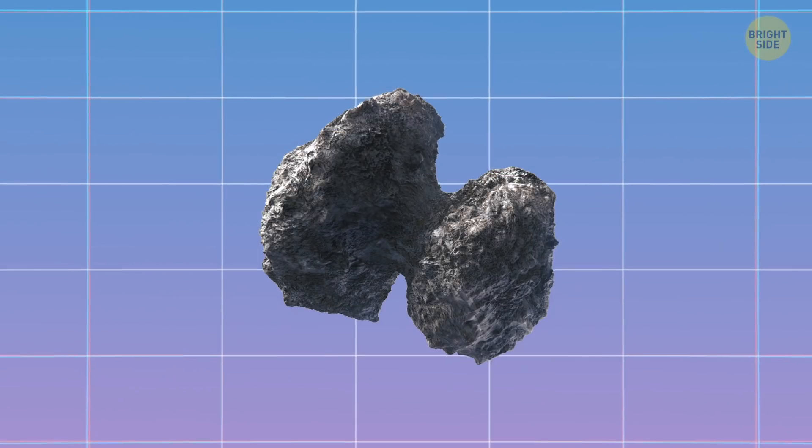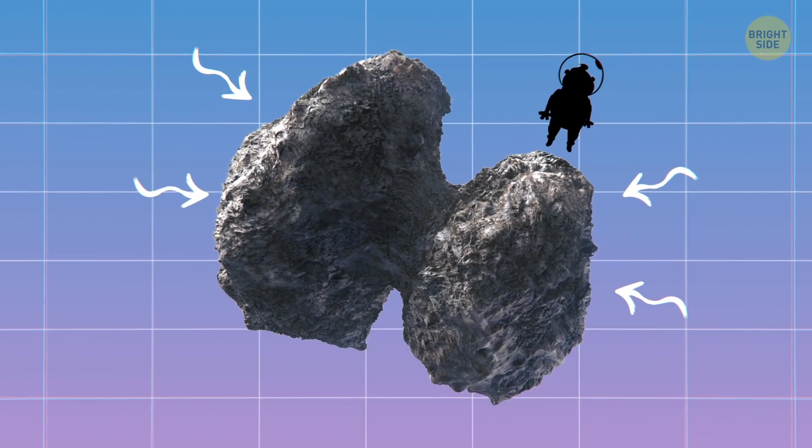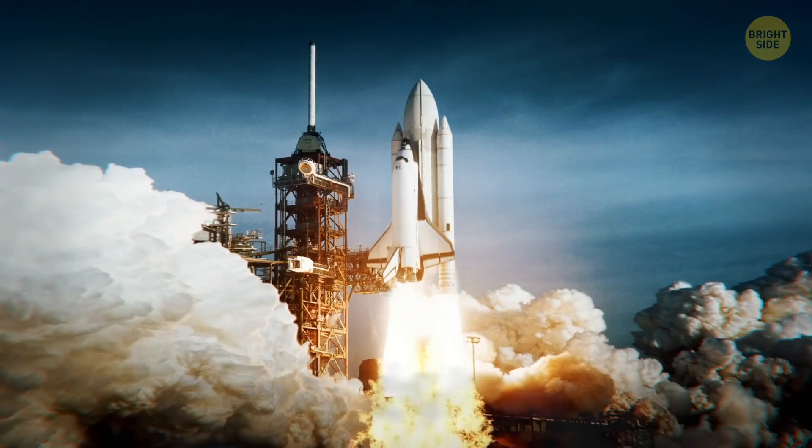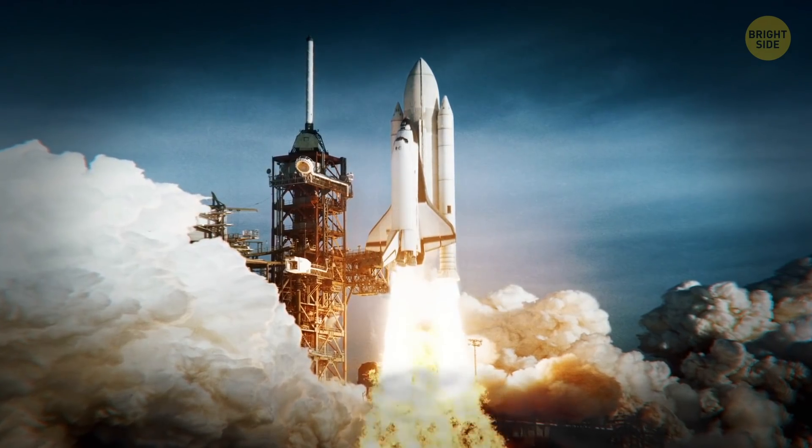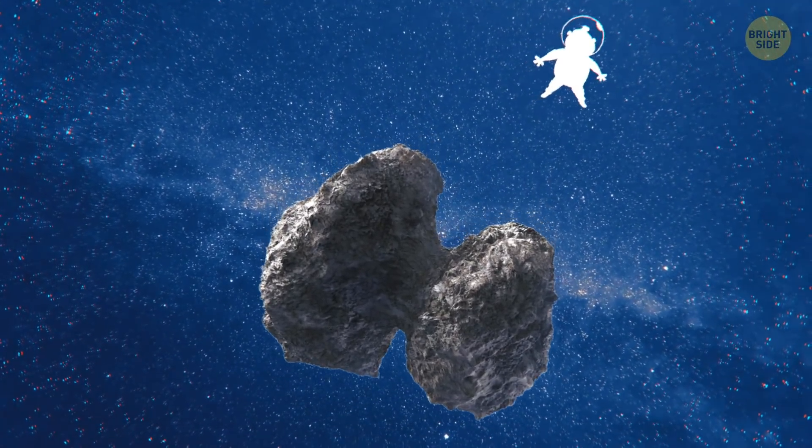Don't practice your jumping on Comet 67P, though. Its gravity is so weak, your jump would surpass its escape velocity. That's the minimum speed you need to escape the pull of gravity, like rockets blasting off Earth. On this comet, you jump up and go floating off into space.